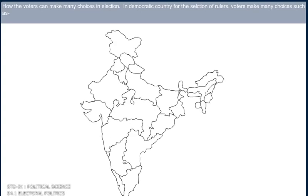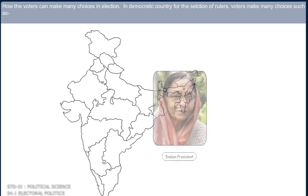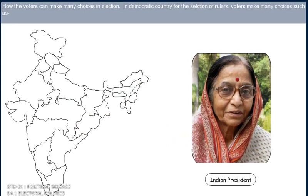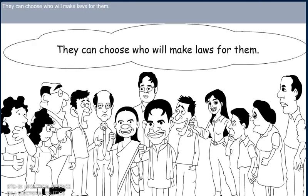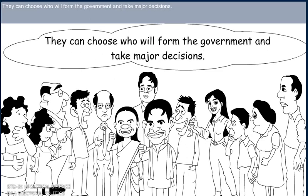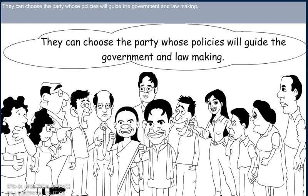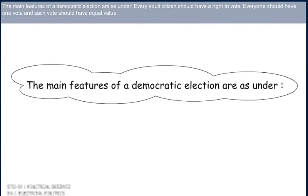How can voters make choices in an election? In a democratic country, for the selection of rulers, voters make many choices. They can choose who will make laws for them. They can choose who will form the government and take major decisions. They can also choose the party whose policies will guide the government and lawmaking.